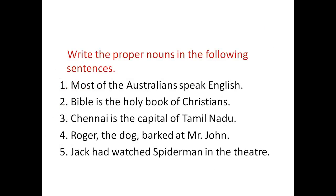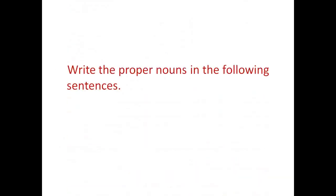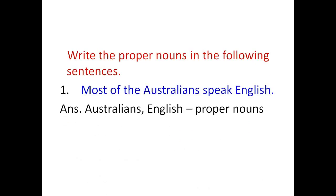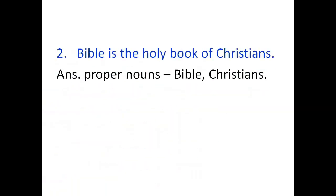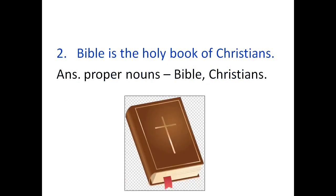Now, let us write the Proper Nouns in the following sentences. 'Most of the Australians speak English.' The Proper Nouns are Australians and English. Australians is the name of the people who live in Australia, and English is the name of a language, so both are Proper Nouns. 'Bible is the Holy Book of Christians.' The Proper Nouns are Bible and Christians, because Bible is the special name of the Holy Book, and Christians is the special name of the people who follow the Christian religion.